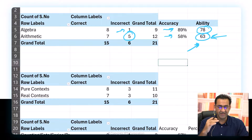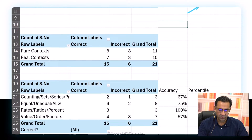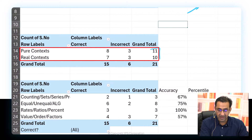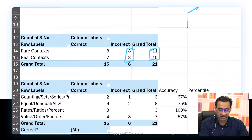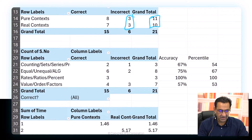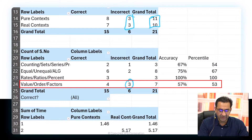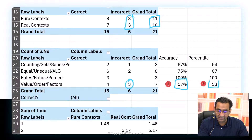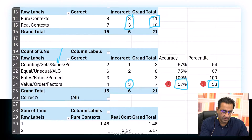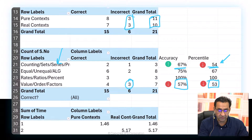Looking at pure versus real context, the ability scores and accuracies are very similar — three incorrect in both sections, roughly three out of ten and three out of eleven. Looking at accuracy by content domain, value, order, and factors is clearly an issue with the lowest accuracy. In counting, set, series, and probability, despite higher accuracy, the ability estimate is lower because the student wasn't served many difficult questions.